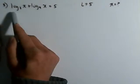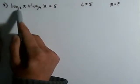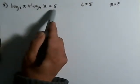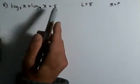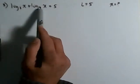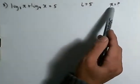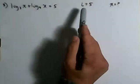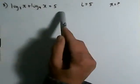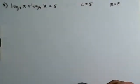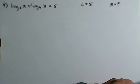I have a question: log base three of x plus the log base four of x is equal to five. And of course, since it's an equation, I want you to figure out what the value of x is. Level five question. So if you kind of know how to get started, just spend about two or three minutes trying to figure out how you would do this.